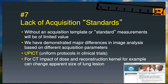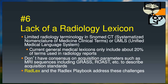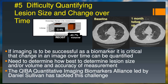Another challenge: is there a radiology lexicon for database lookups? Is there a uniform way to describe size, make measurements, describe shape and location? The RSNA's RadLex project essentially addresses many of the challenges of a lexicon to describe findings, and I'd love to see more general adoption worldwide. The next challenge is difficulty quantifying lesion size and change over time. The QIBA effort — the Quantitative Imaging Biomarkers Alliance, led by Daniel Sullivan — has attempted to tackle this challenge for CT and other modalities.